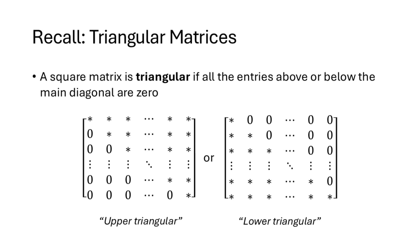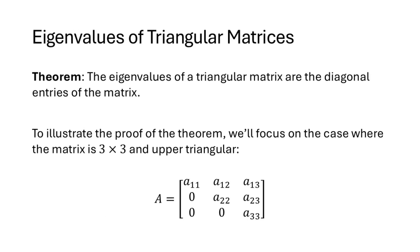Now let's talk about some properties of eigenvalues. Recall from Lecture 26 that for triangular matrices, the determinant equals the product of the diagonal entries. It turns out that the eigenvalues of a triangular matrix are easy to compute — in fact, those eigenvalues are just the diagonal entries of that triangular matrix.